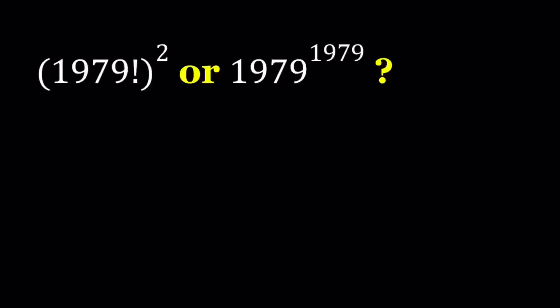We have an exponential number and a factorial squared. Obviously, one of these numbers is going to be greater than the other one. They're not equal for sure. So let's find out which number is greater. At the end, I'm not going to give you what the numbers are. Obviously, Wolfram Alpha can give you the answer. But I'll give you how many digits these numbers have at the end.